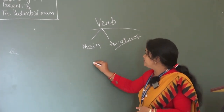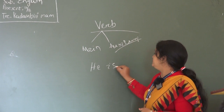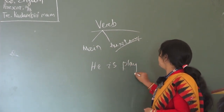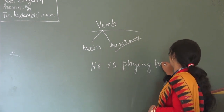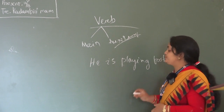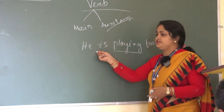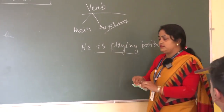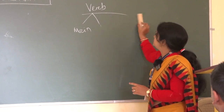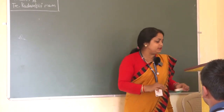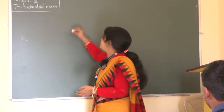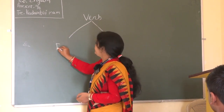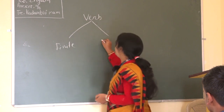Okay, suppose 'he is playing football.' Here, which one is the main verb? Playing. 'Is' is the auxiliary verb. Okay. Auxiliary is also two types. I have already told you, but sometimes you forget it.